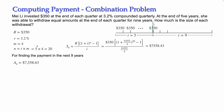The interest stays at 3.2%. In other problems a different interest rate may be stated in the problem, but here we continue with the same rate. The withdrawals are again quarterly, so the number of payments will be t = 9 multiplied by 4, giving n = 36.